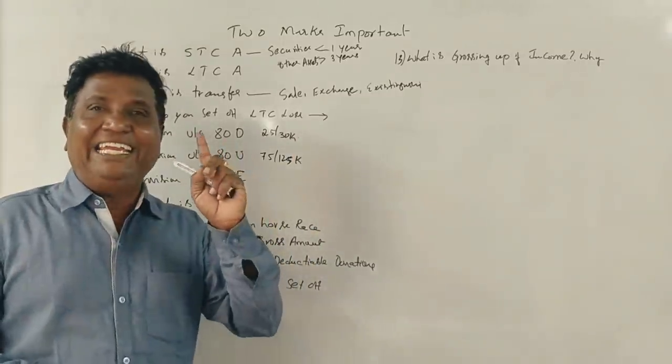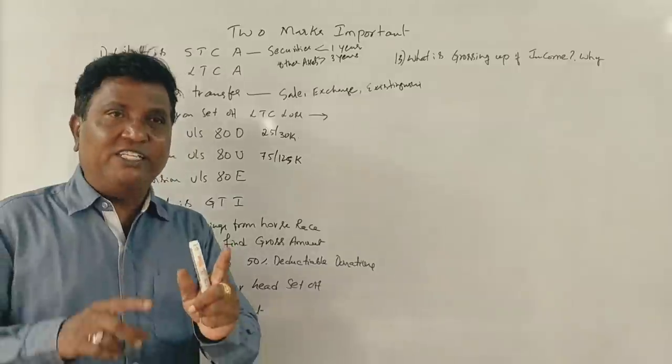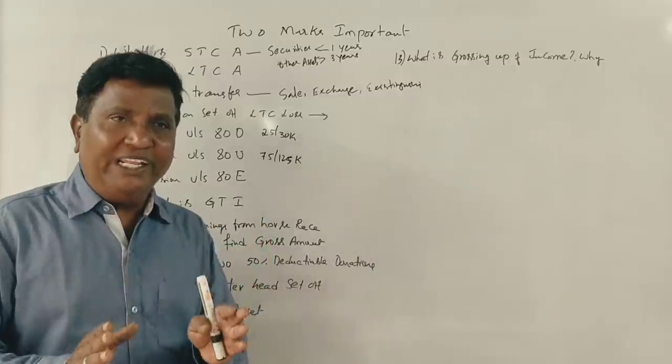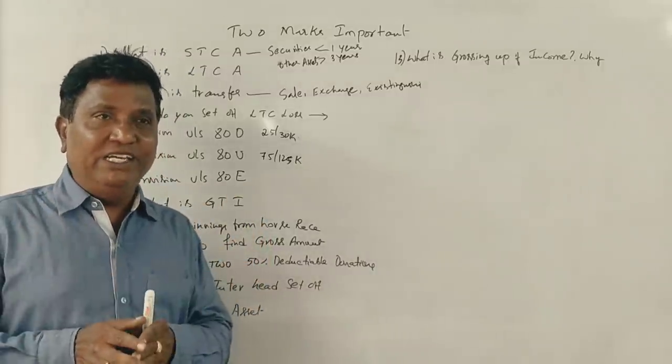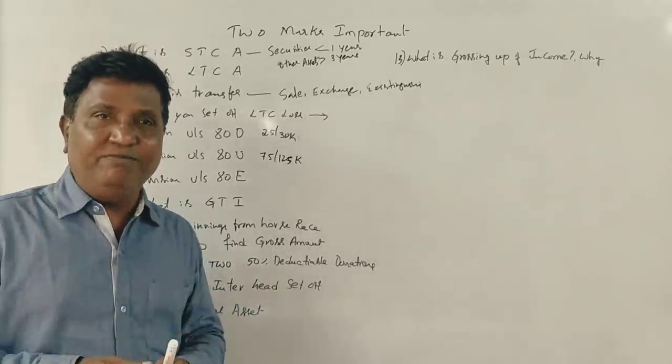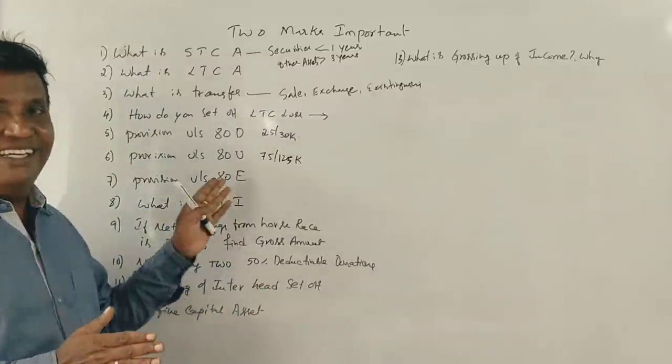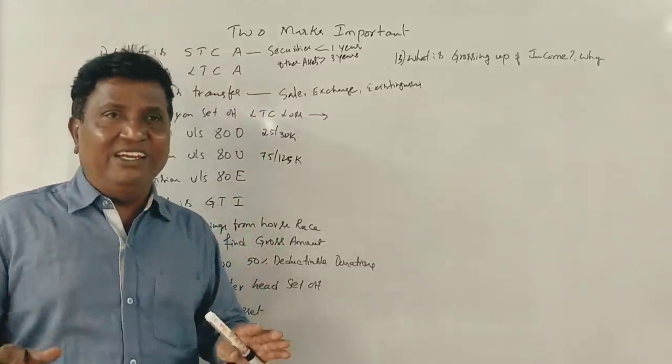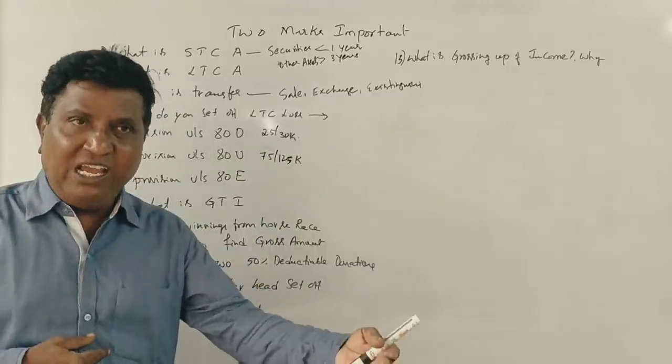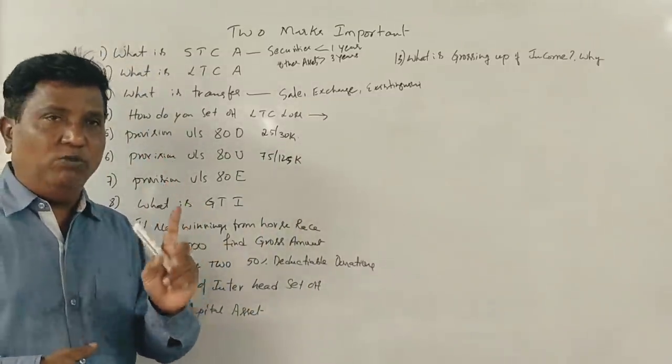Provision under section ATE. E for education. If the Assessee or his spouse or their children, if they are pursuing or doing their higher education, and if the Assessee has taken any loan for higher education, any interest paid or payable is given as a deduction under section ATE. It is not a limitation.